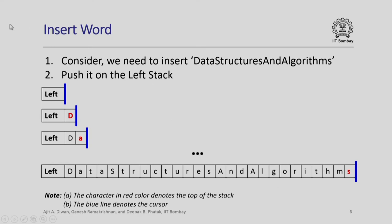First, inserting a word. Consider we need to insert 'data structures and algorithms' — push it to the left stack. So 'd', 'a', 't', 'a', etc. — every time I type a character it is pushed onto the left stack. When I push this entire string of characters, the right stack will contain nothing, the left stack will contain all these characters, and the cursor continues to act as a divider.